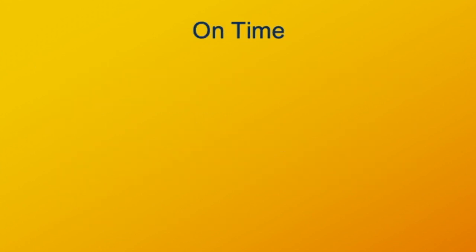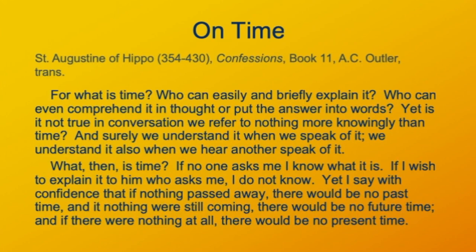Augustine, an early saint of the Christian Church, wondered about time and pondered how difficult it is to define. It truly is puzzling, but whatever it is, physics as we understand it is nothing without time. I want you to read this definition — even pause the video and read it. Augustine says: if nothing passed away, there would be no past time; if nothing were still coming, there would be no future time; and if there were nothing at all, there would be no present time. So Augustine is saying that time depends on the rest of the universe, that time depends on change — if there's no change, then there is no time. He's not saying there's no way to quantify time; he's saying there isn't any time. What do you think? Do you agree that time is actually dependent on things happening in the universe, or would time happen even if everything were frozen and nothing goes on?